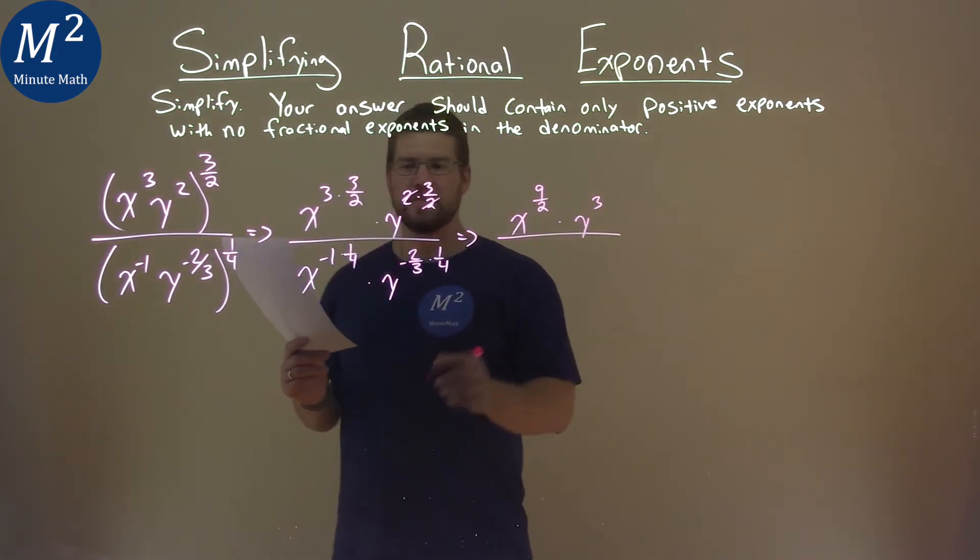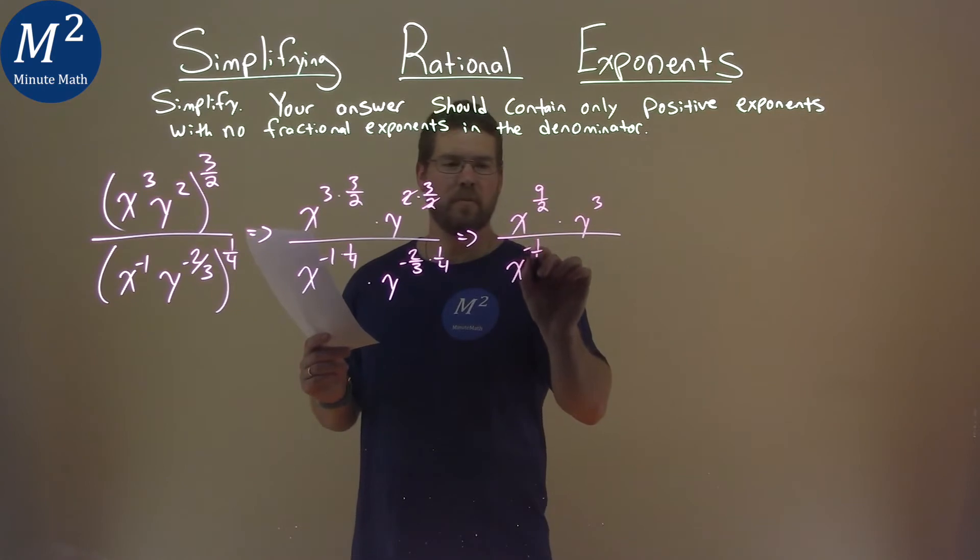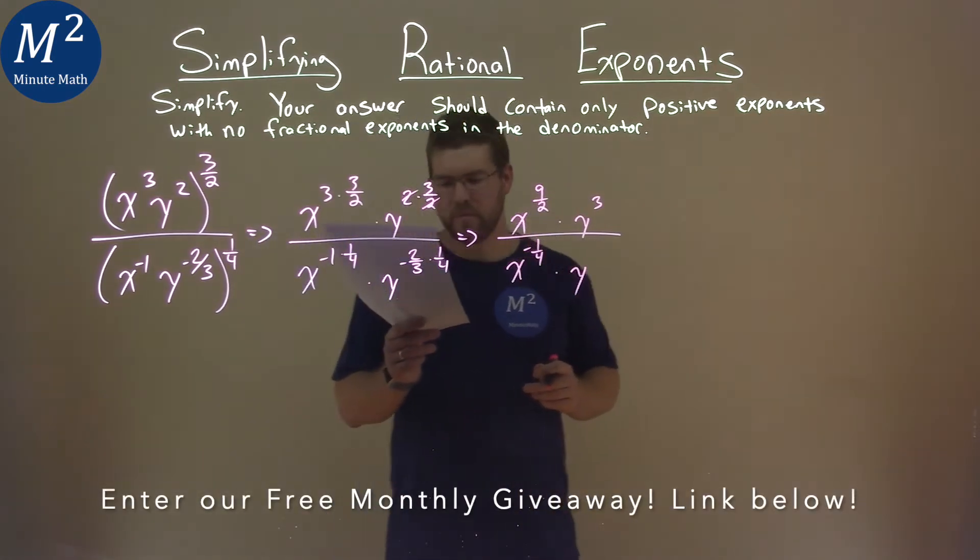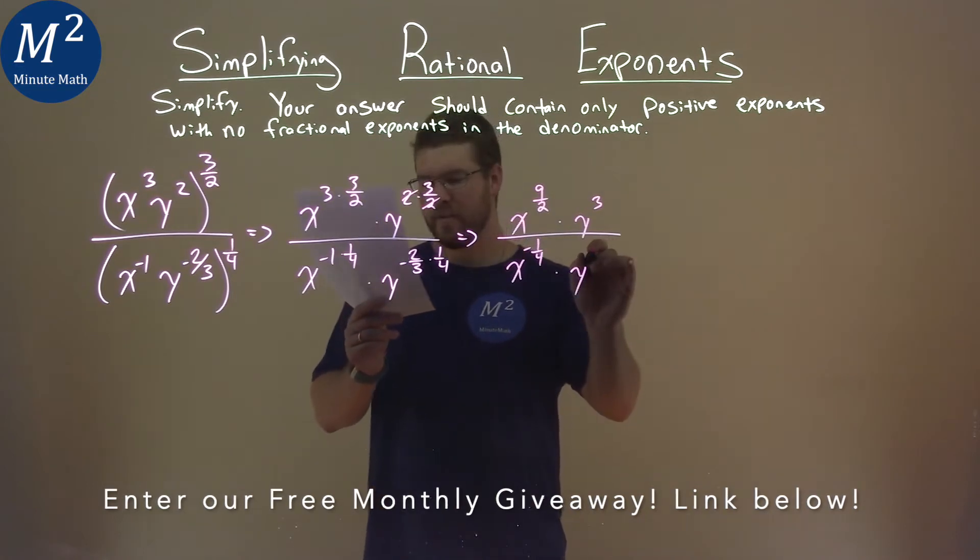In the denominator, we have x to the negative one-fourth power, and then we have y, negative two-thirds times one-fourth, is negative two-twelfths.